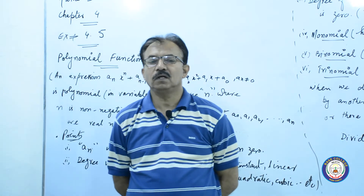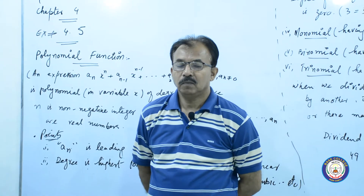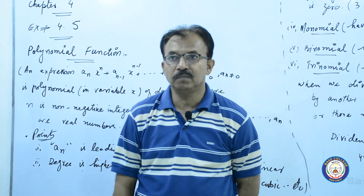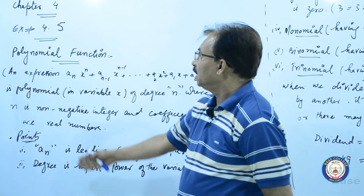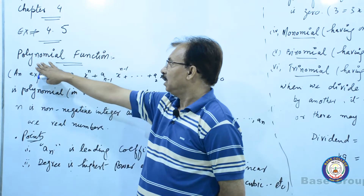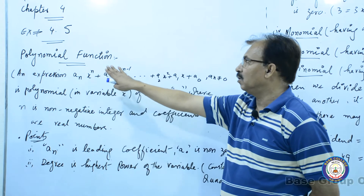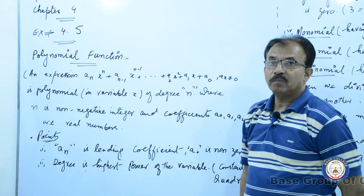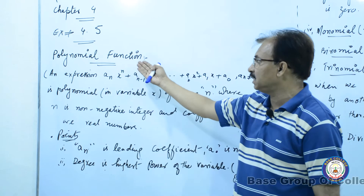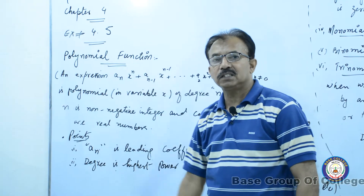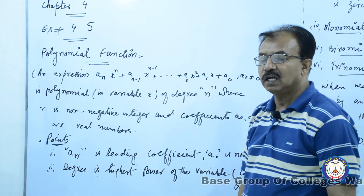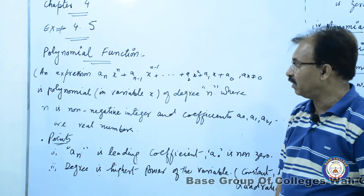جیسا کہ ہم نے exercise 4.4 complete کی ہے، اب ہم نئی exercise کی طرف آ رہے ہیں۔ یہ chapter 4 ہی چل رہا ہے، exercise number 4.5۔ اس میں سب سے پہلا topic polynomial functions ہے۔ polynomial functions کی زیادہ detail آپ second year میں پڑھیں گے، second year کے first chapter میں functions کے بارے میں کافی detail ہے۔